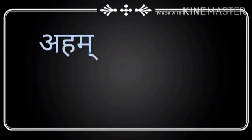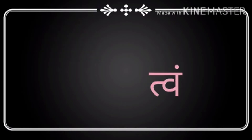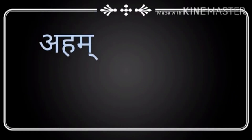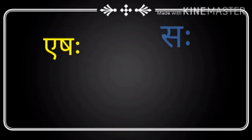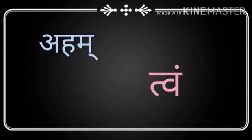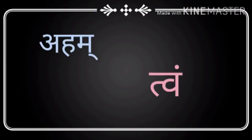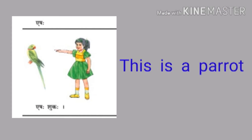The first chapter has four subcategories: Ekavachnam Pulling, Ekavachnam Strilinga, Ekavachnam Napunsakalinga, and Ekavachnam multi-gender. Pulling Ekavachnam is based on two words: Ishaha means 'this' and Saha means 'he' or 'that.' The first example is Ishaha Shukaha — this is a parrot.